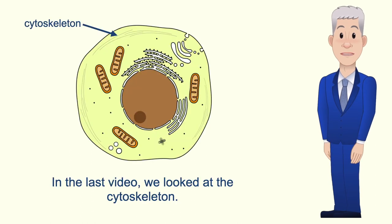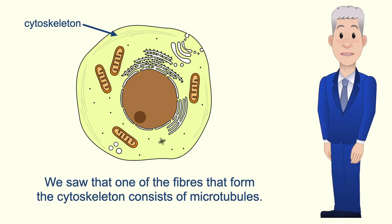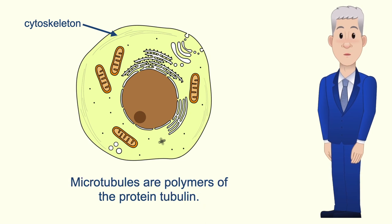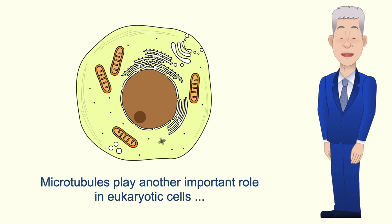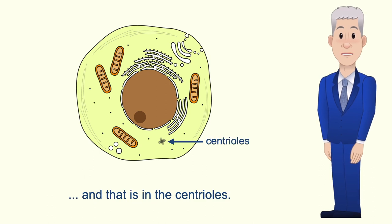In the last video we looked at the cytoskeleton and we saw that one of the fibers that form the cytoskeleton consists of microtubules. Microtubules are polymers of the protein tubulin and microtubules play a number of roles including the movement of organelles. Microtubules also play another important role in eukaryotic cells, and that is in the centrioles.